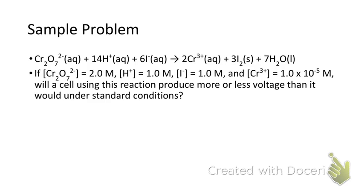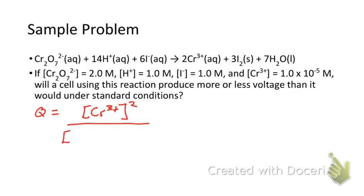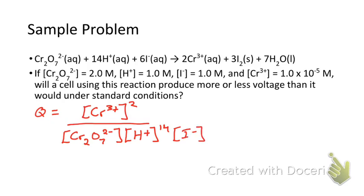So let's take a look at this sample problem. We have a spontaneous reaction driving a voltaic cell, and we're given non-standard solution concentrations, and we need to figure out if this is going to produce more or less voltage than it would under standard conditions. Q for this reaction is going to be the concentration of chromium three ions squared over the concentration of dichromate ions to the first power times the concentration of hydrogen ions to the fourteenth power times the concentration of iodide ions to the sixth power.